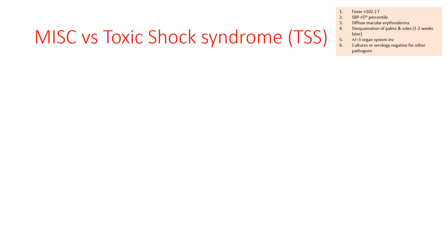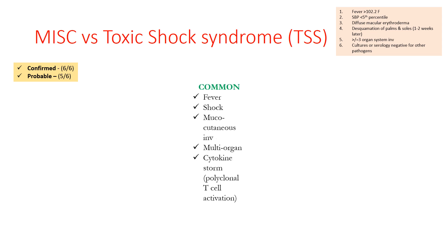TSS is confirmed if all 6 criteria are met, and probable if only 5 of the 6 criteria are present. Common features with MIS-C include fever, shock (in the type of MIS-C likely to be confused with TSS), mucocutaneous involvement, multi-organ syndrome, and cytokine storm — which is a classical feature of both entities.